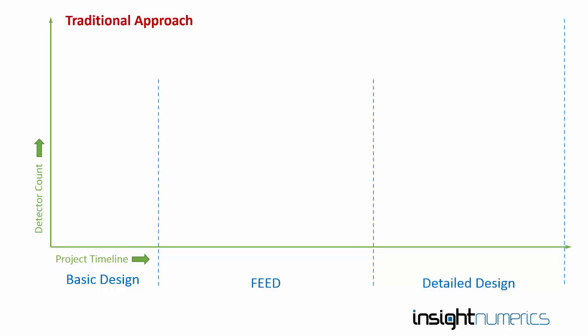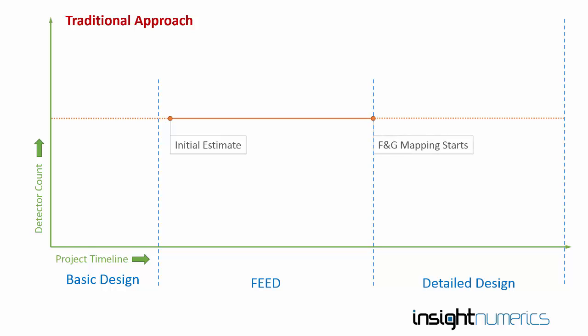Traditionally, the initial estimate of Detector Count is made quite early in feed, well before the fire and gas mapping actually starts, which is usually in the Detail Design phase. The problem is that there's a huge discrepancy between the analysis techniques behind the initial estimate — which is usually nothing more complicated than a simple sketch — and the fire and gas mapping.